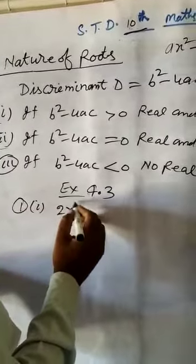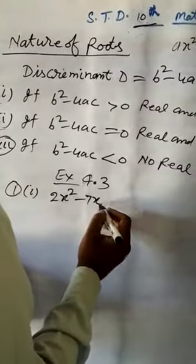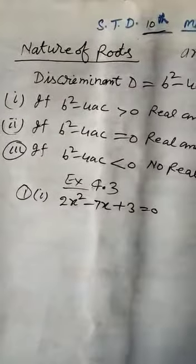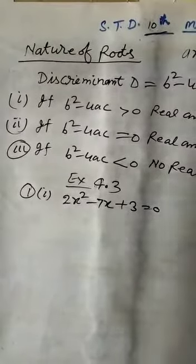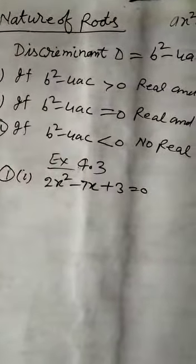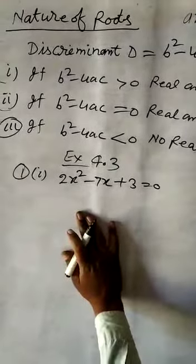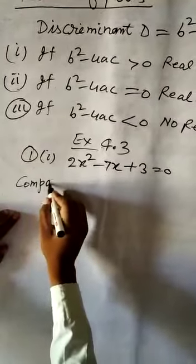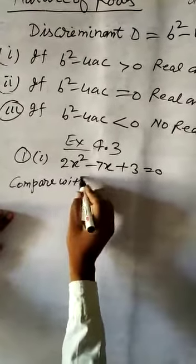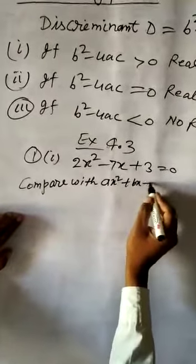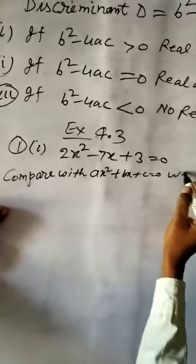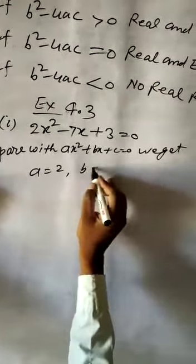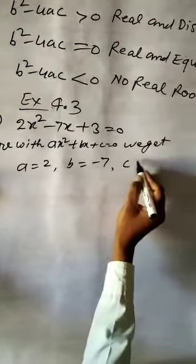Problem: 2X square minus 7X plus 3 equal to 0. If real roots exist, compare with AX square plus BX plus C equal to 0.